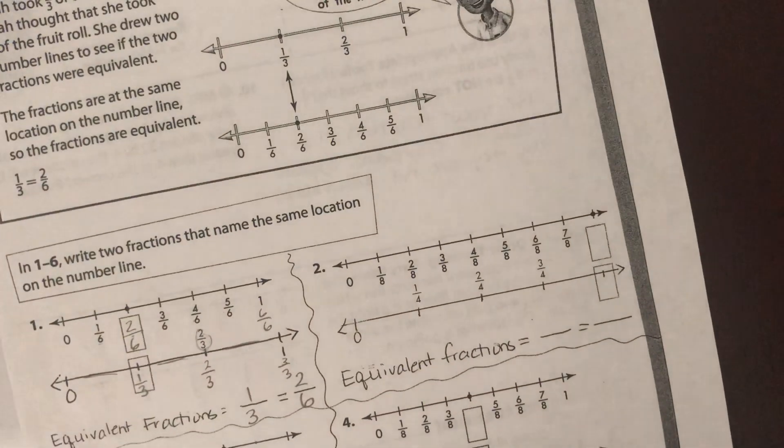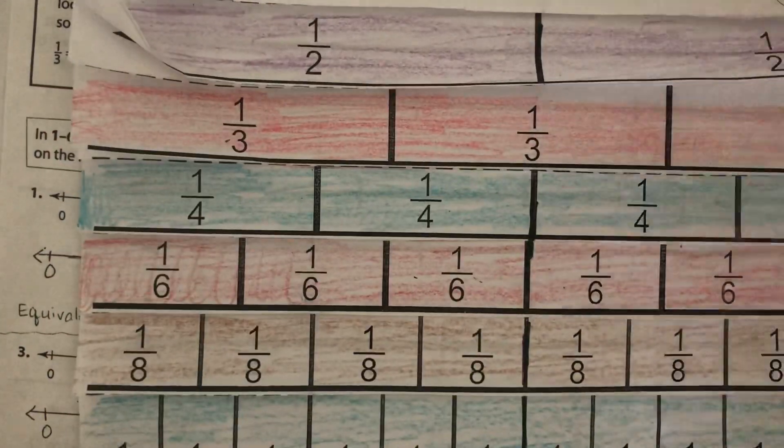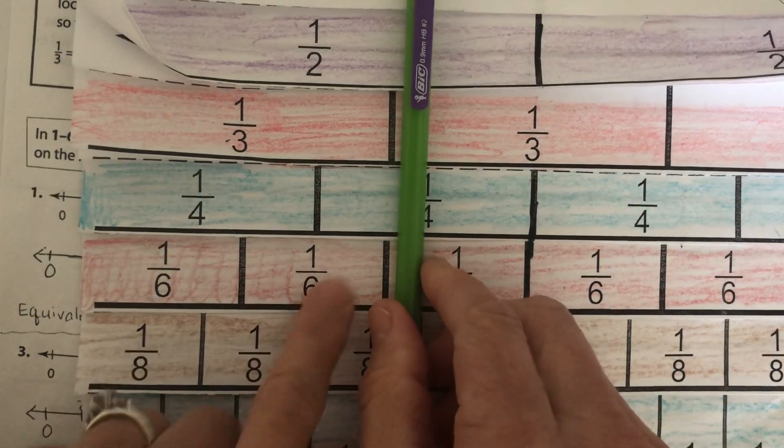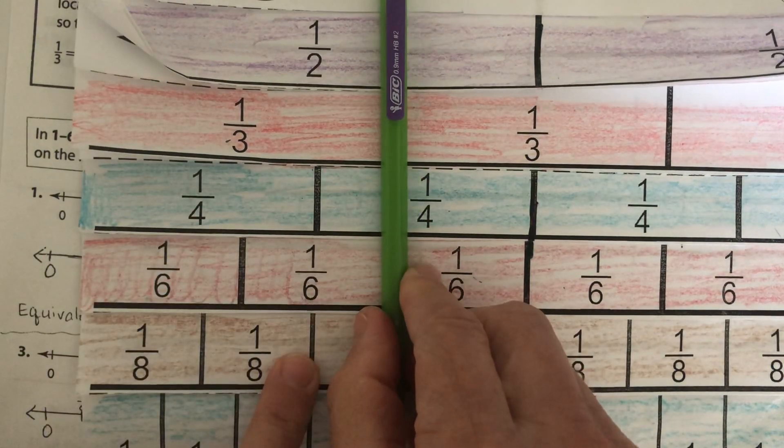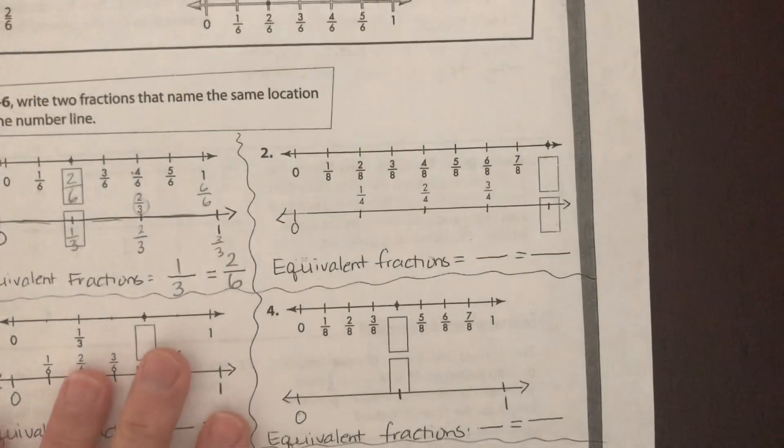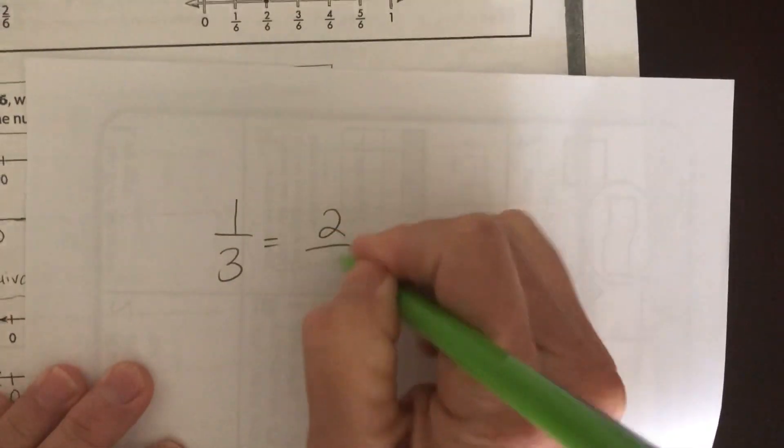Now let's just take a look at our fraction flip book. We have 1-3 is right here, and that is the same as 2-6. See how the line is exactly the same spot? So 1-3 is the same side as 2-6. We also know that if we're looking at it, we've shown this too, right? 1-3 is equal to 2-6.